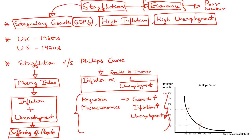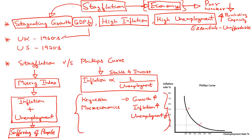Increasing unemployment will reduce purchasing capacity and increasing inflation will make the basic essentials unaffordable for the weaker sections. This term was introduced in the 1960s when the United Kingdom was going through a long period of recession. Later, the term became popular in the 1970s when the US was going through a long period of recession following the oil crisis.